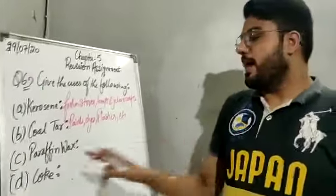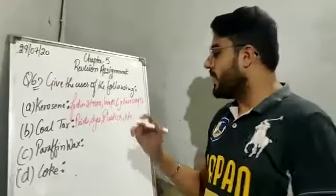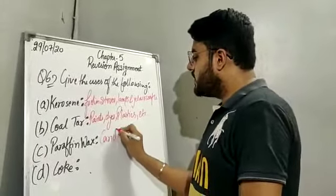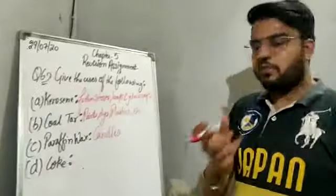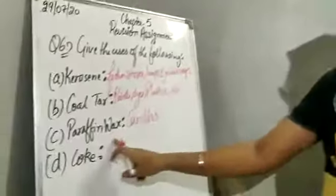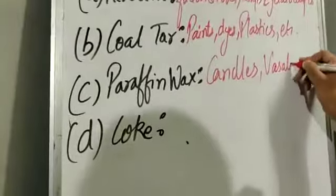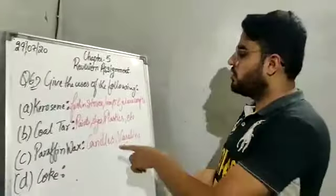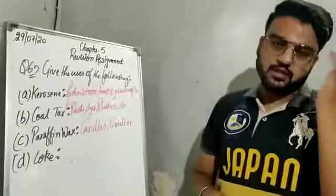Next is paraffin wax. Paraffin wax is used in making candles. Candles are made up of paraffin wax, and it is also used in the manufacturing of vaseline — the vaseline petroleum jelly is also made using paraffin wax.